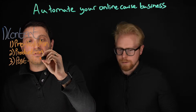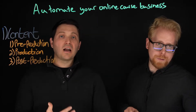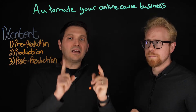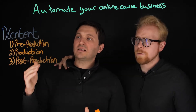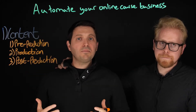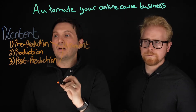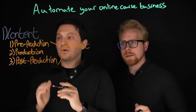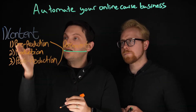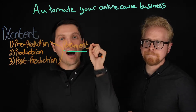Post-production is after producing all the content — you've got to edit it, put it together, listen to your learners, and make sure you're making content that your learners want. When it comes to automating this part, it's very simple: document everything you are doing within pre-production, production, and post-production. The more content you produce and the more experience you have within these three categories, the more you'll figure out what you can outsource.